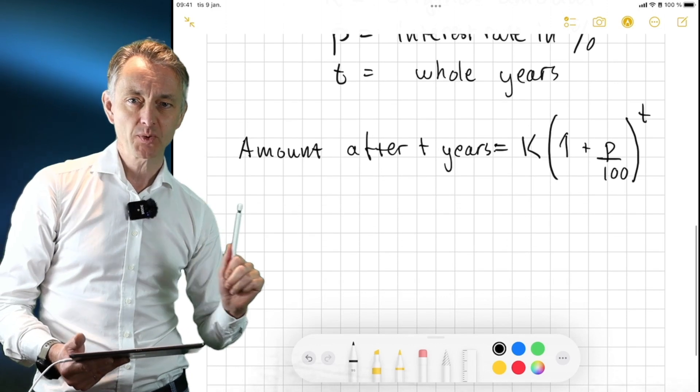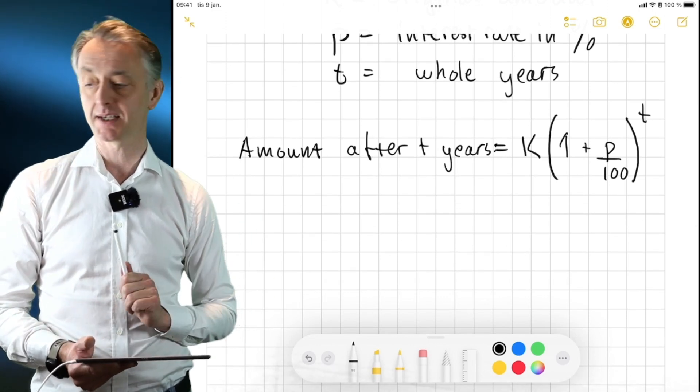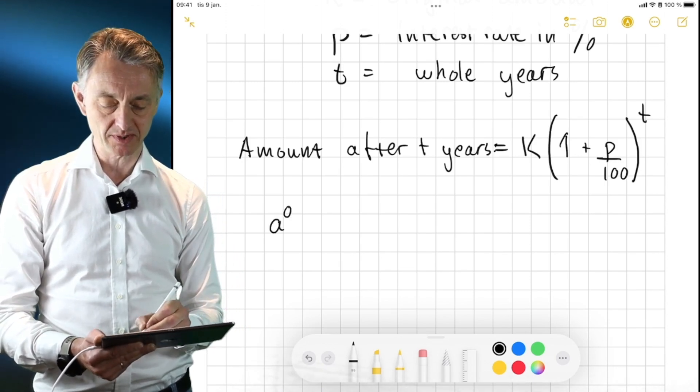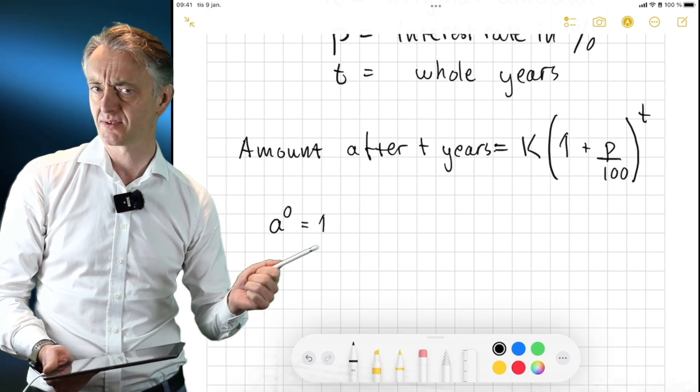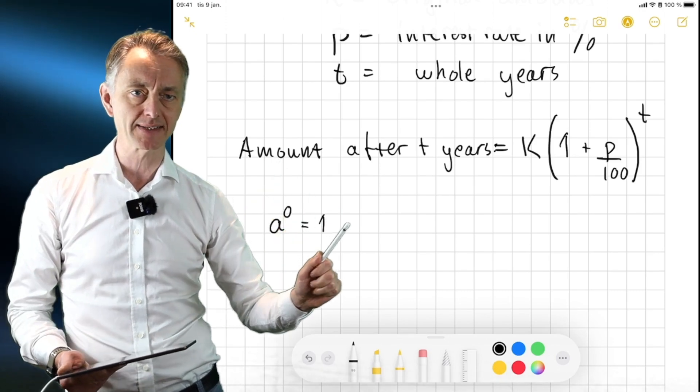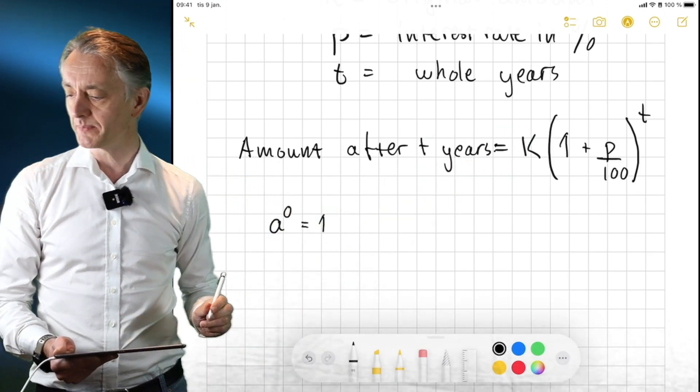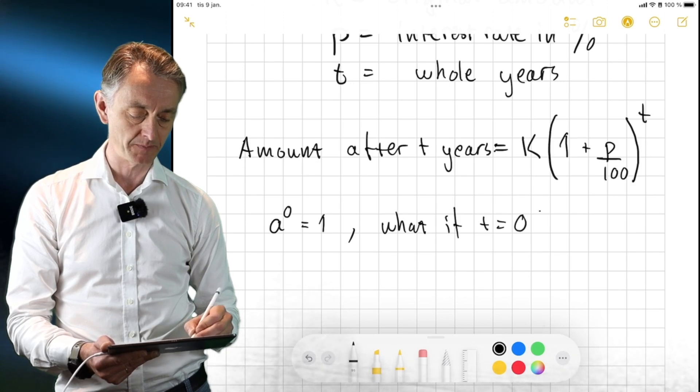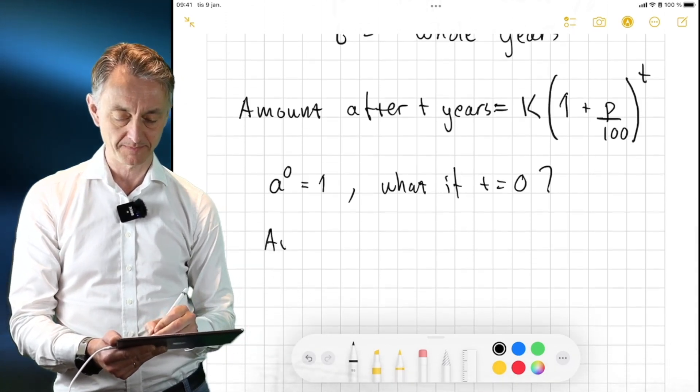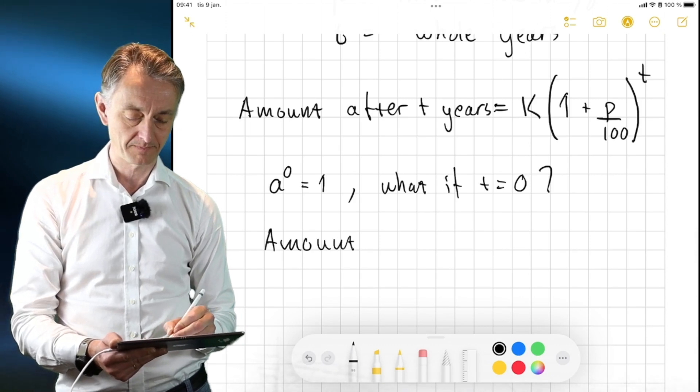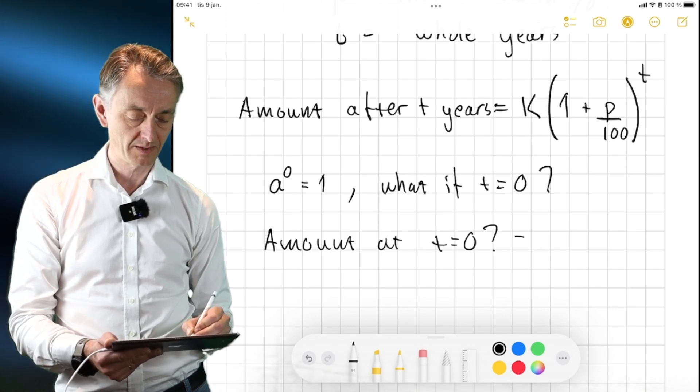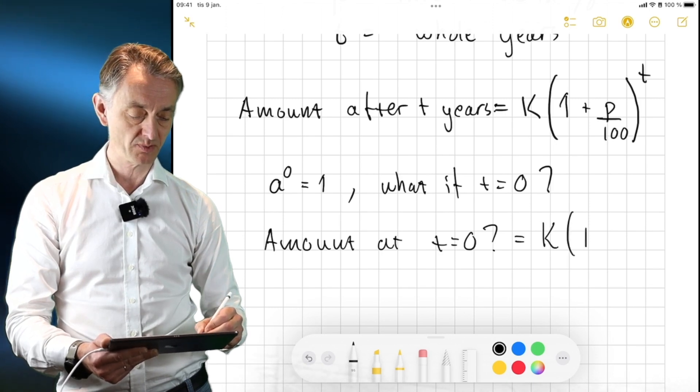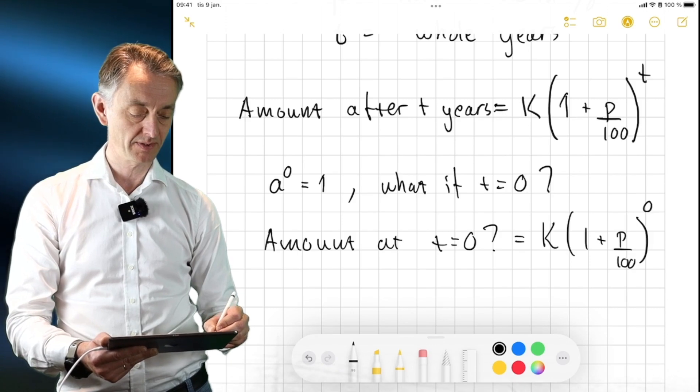So if you remember from last time, we discussed the property of powers that we know that a to the power of 0 was equal to 1. And we ask ourselves, why is this reasonable? It looks a bit weird, right? So let's apply that to this rule. So what would it mean in this case? What if T equals 0? Well, how much money would you have? Well, that would be, let's use the formula. K times 1 plus P over 100 to the power of 0.